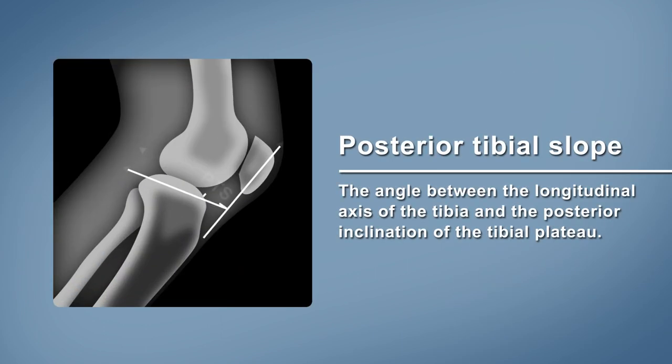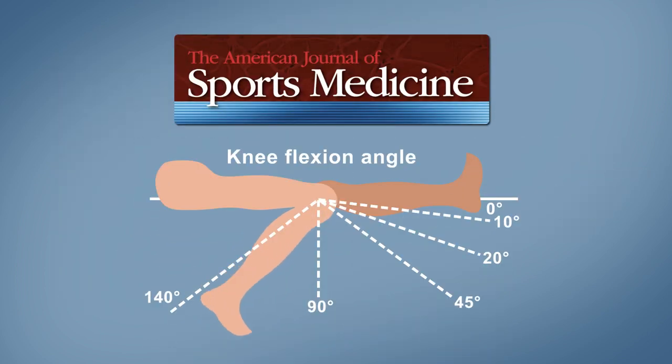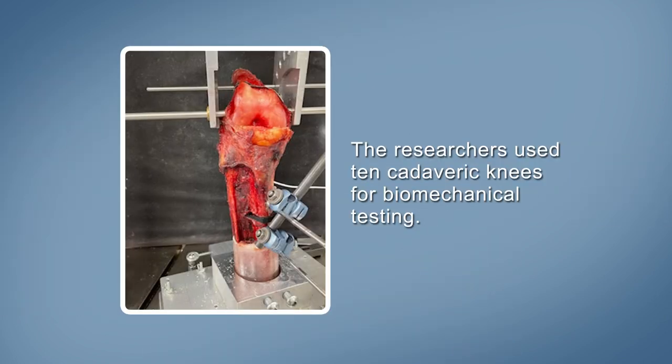Increased posterior tibial slope is an identified risk factor for PMMR tears. A study recently published in the American Journal of Sports Medicine explored how changes in posterior tibial slope and knee flexion angle impact the forces on the PMMR. The researchers used 10 cadaveric knees for biomechanical testing.